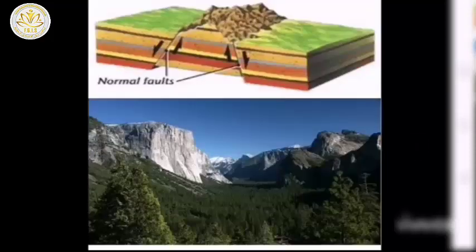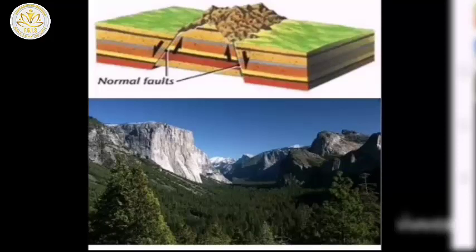Second type: fold block mountains. A fault is a break in Earth's crust along which movement occurs. They are formed when tension pulls crust apart. At the faults, some blocks of crust fall and others rise.